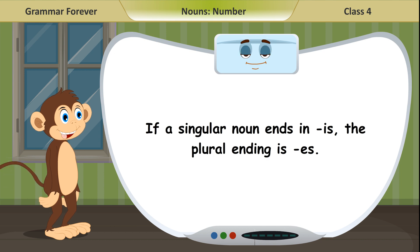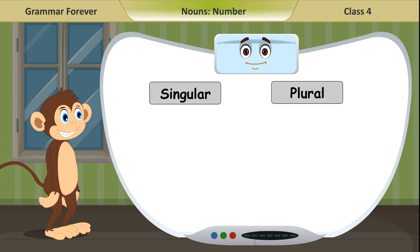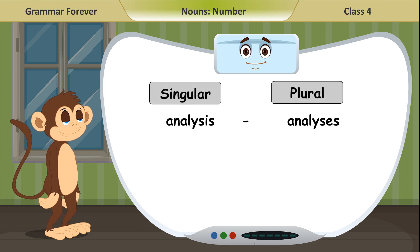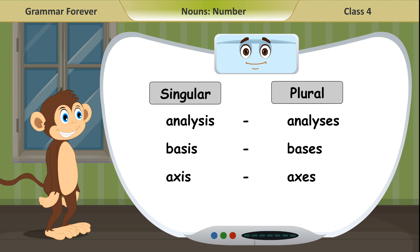If a singular noun ends in IS, the plural ending is ES. Singular, plural: Analysis, analyses. Basis, bases. Axis, axes. Crisis, crises.